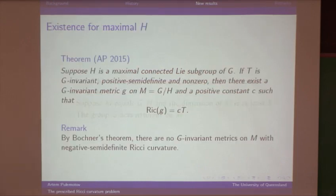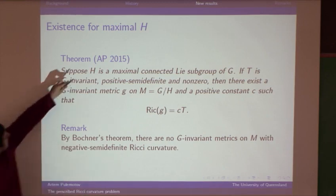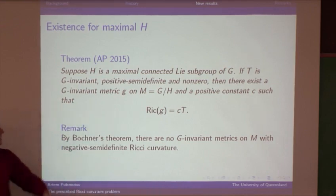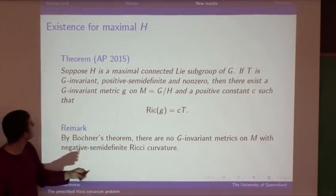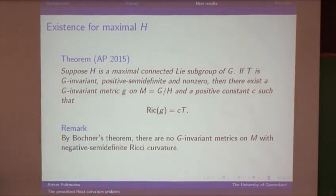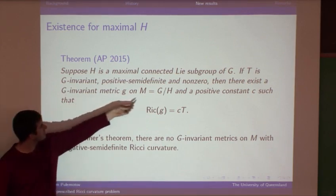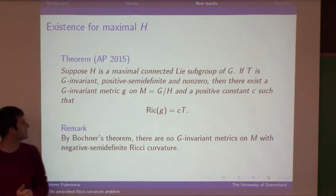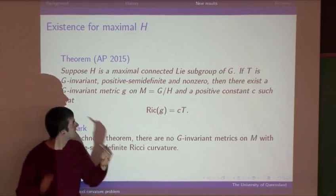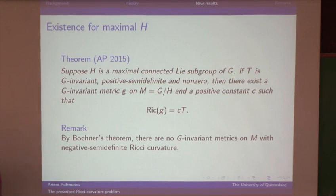Here's the theorem. If H is a maximal connected Lie subgroup of G, and if the tensor T is G-invariant, positive semi-definite, and non-zero, then you can solve the prescribed Ricci curvature problem. That is, there exists a G-invariant metric G on the homogeneous space and a positive constant C such that Ricci(G) = CT.